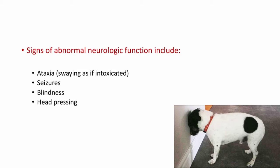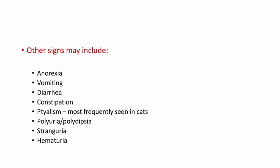Apart from that, the animal can show some other clinical signs. Other signs may include anorexia, vomiting, diarrhea, constipation, ptyalism, polyuria, polydipsia, stranguria, and hematuria.